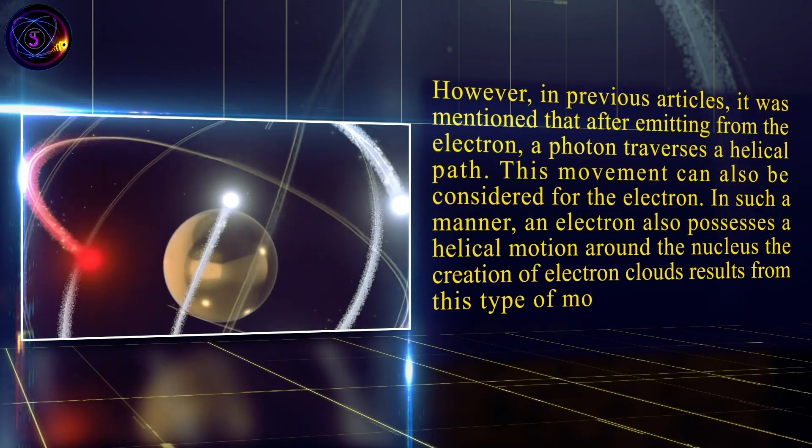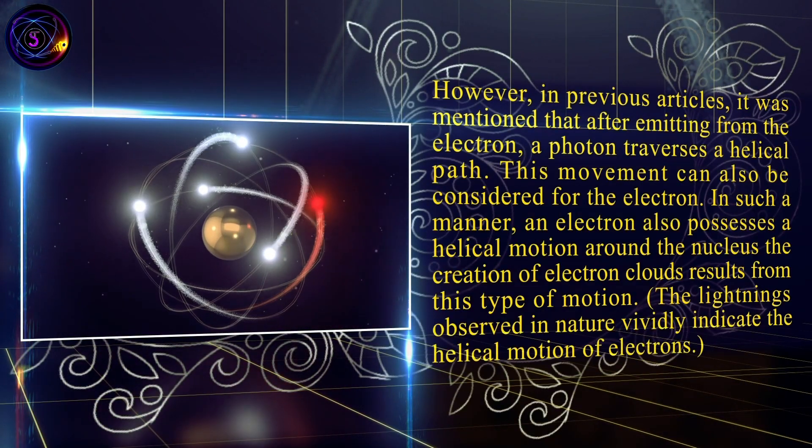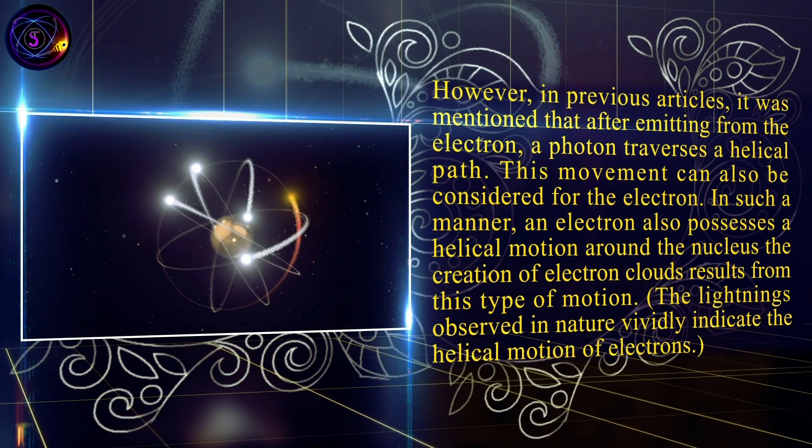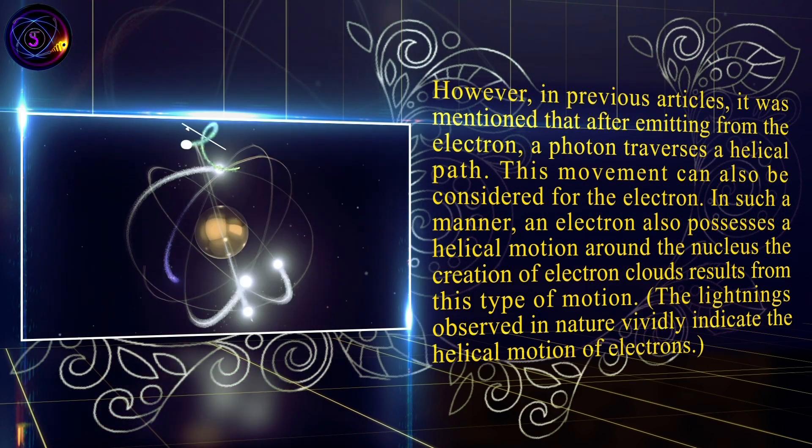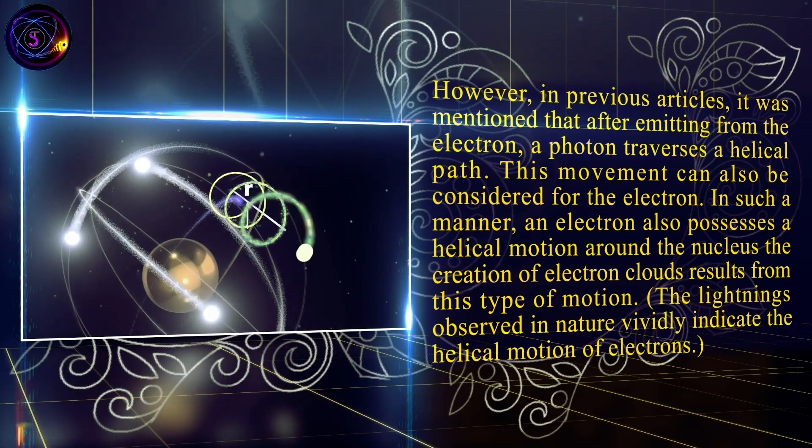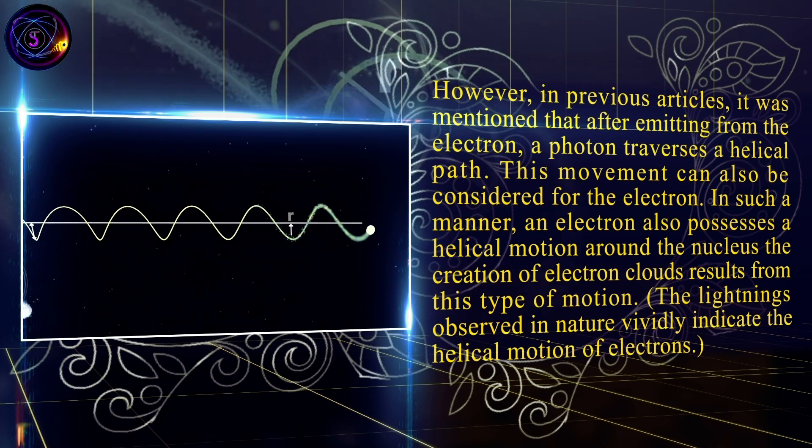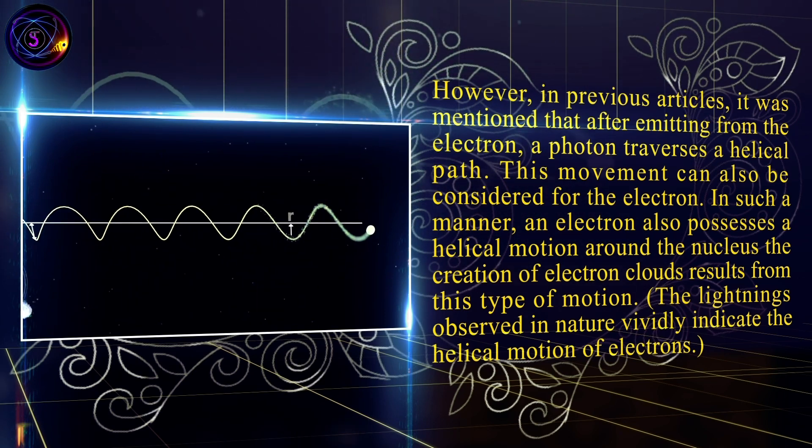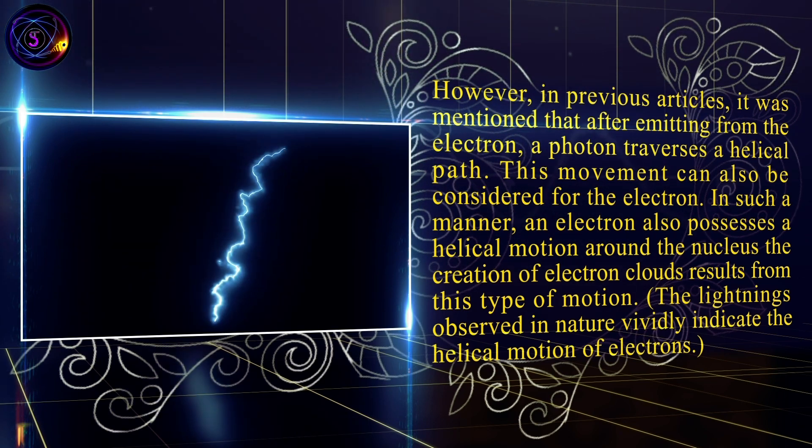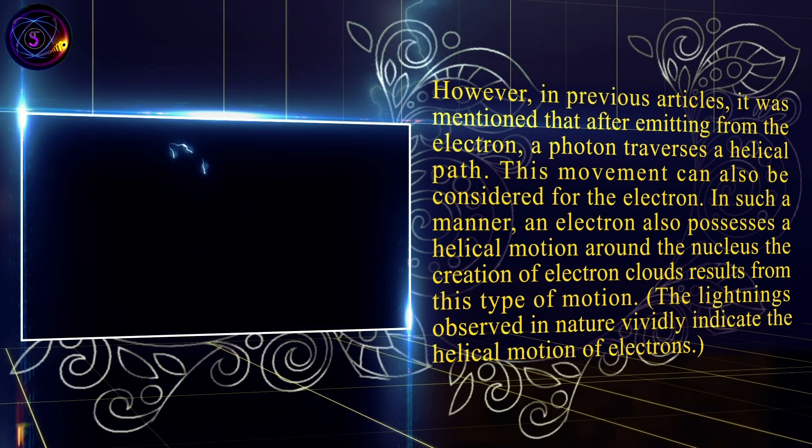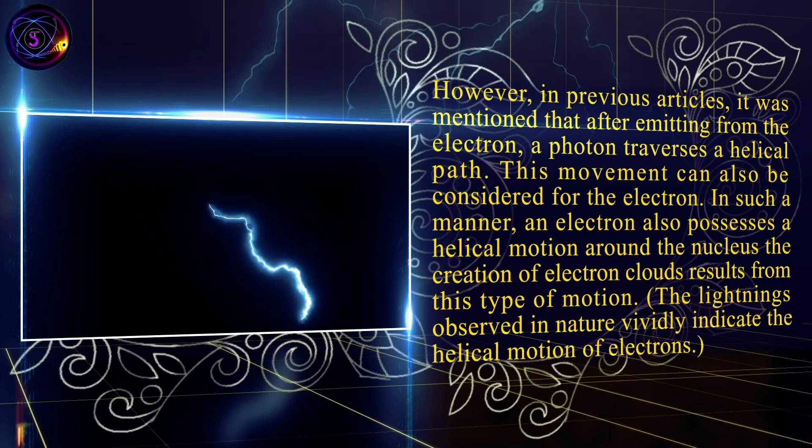However, in previous articles, it was mentioned that after emitting from the electron, a photon traverses a helical path. This movement can also be considered for the electron. In such a manner, an electron also possesses a helical motion around the nucleus. The creation of electron clouds results from this type of motion. The lightnings observed in nature vividly indicate the helical motion of electrons.